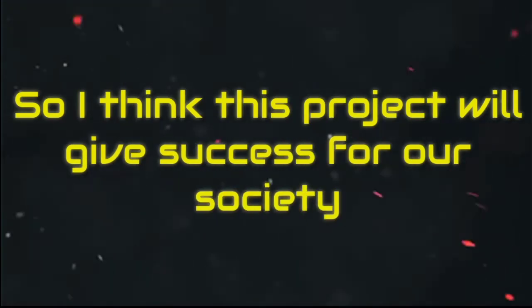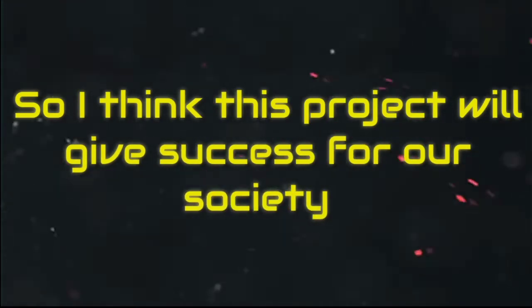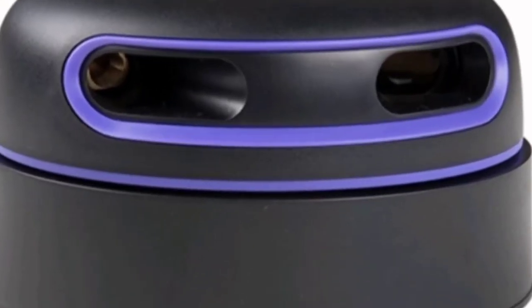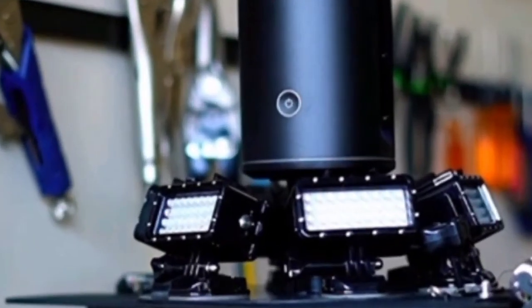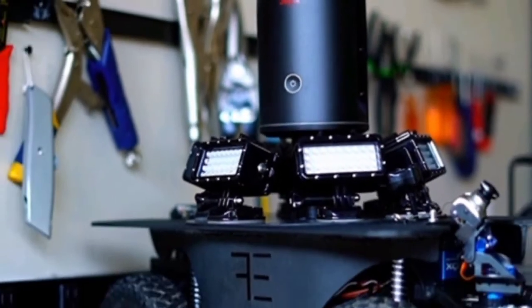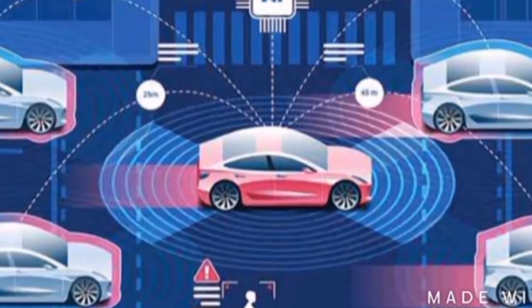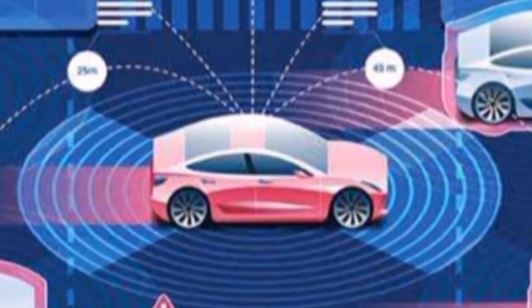So I think this project will give success for our society. Why I use LIDAR? Light Detection and Ranging LIDAR is used to measure the surface of the earth. LIDAR sensor senses the object at 360 degree. It also makes decision by its own.